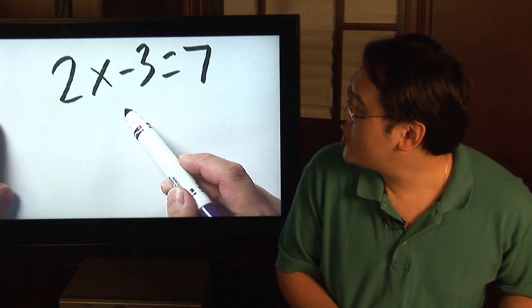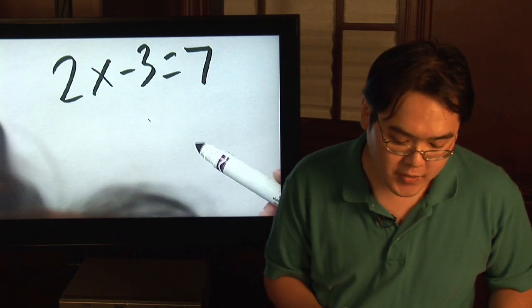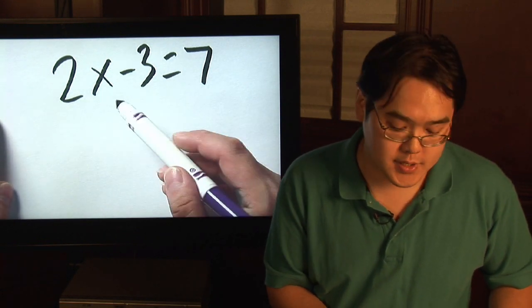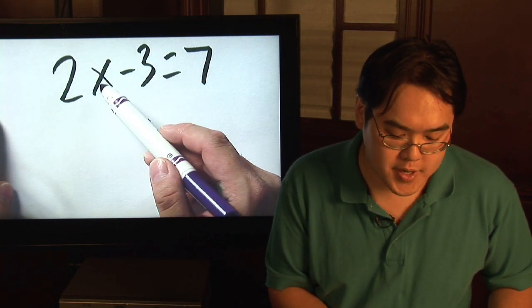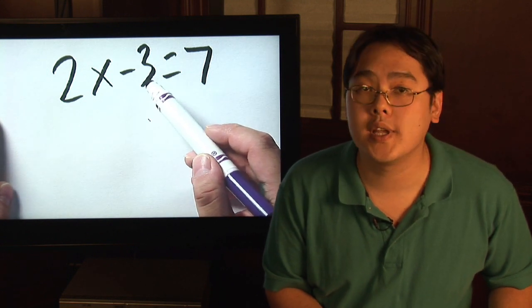Suppose you have the equation 2x minus 3 is equal to 7. Now, the objective is to see 2 times what number and then minus 3 is equal to 7.